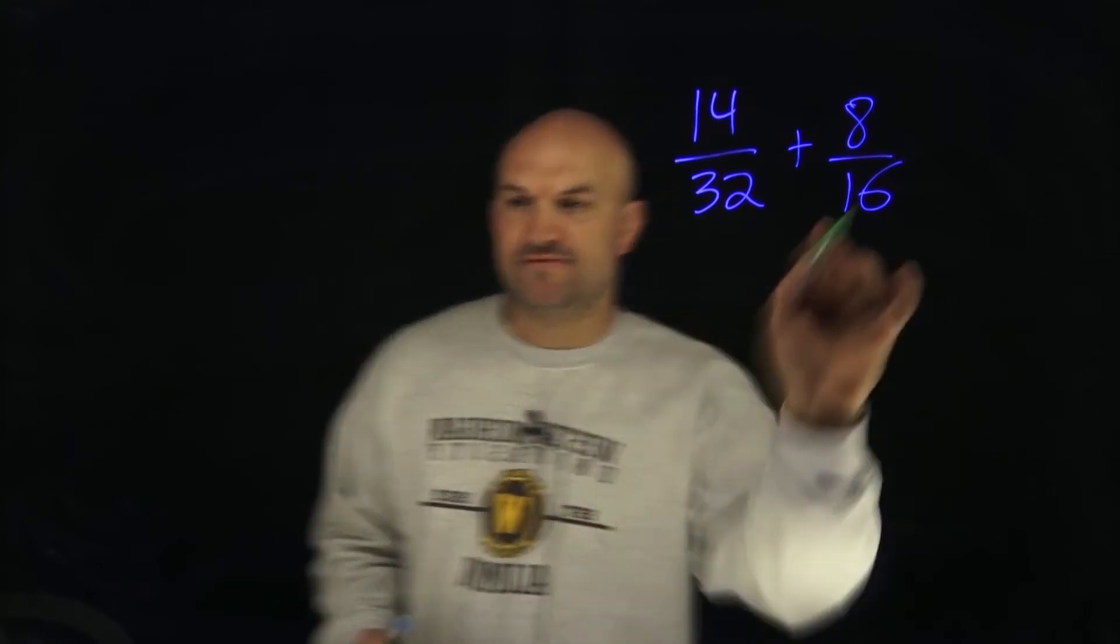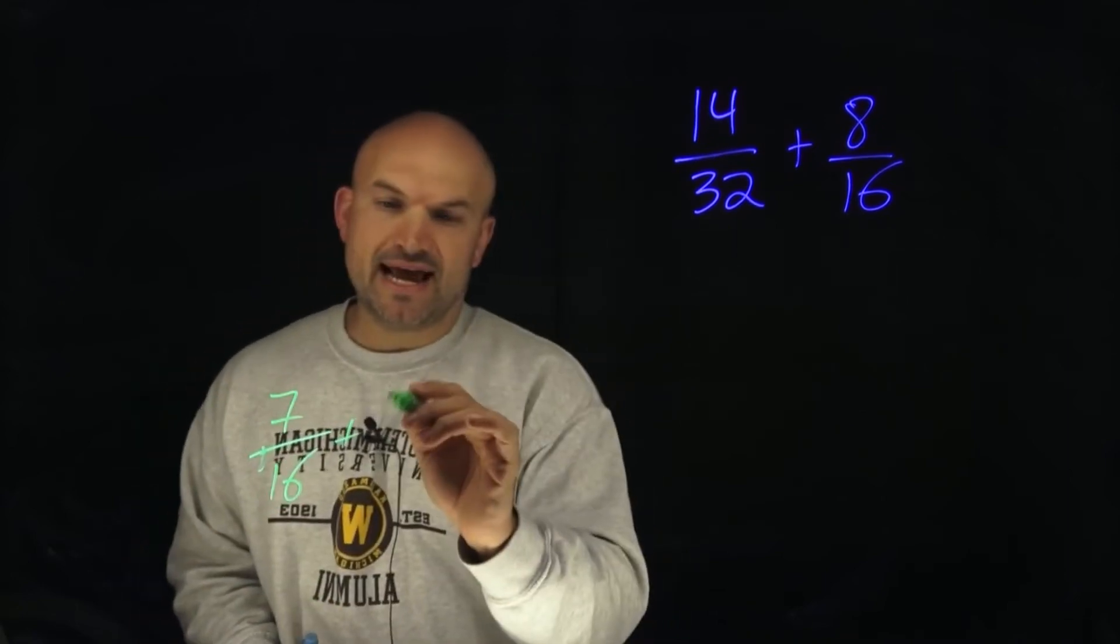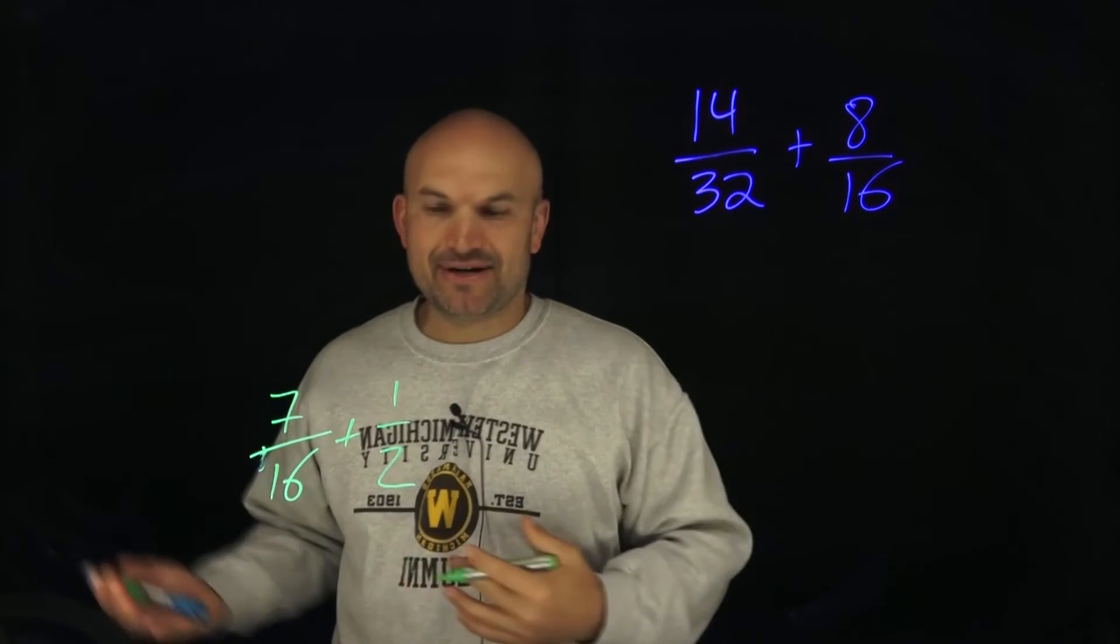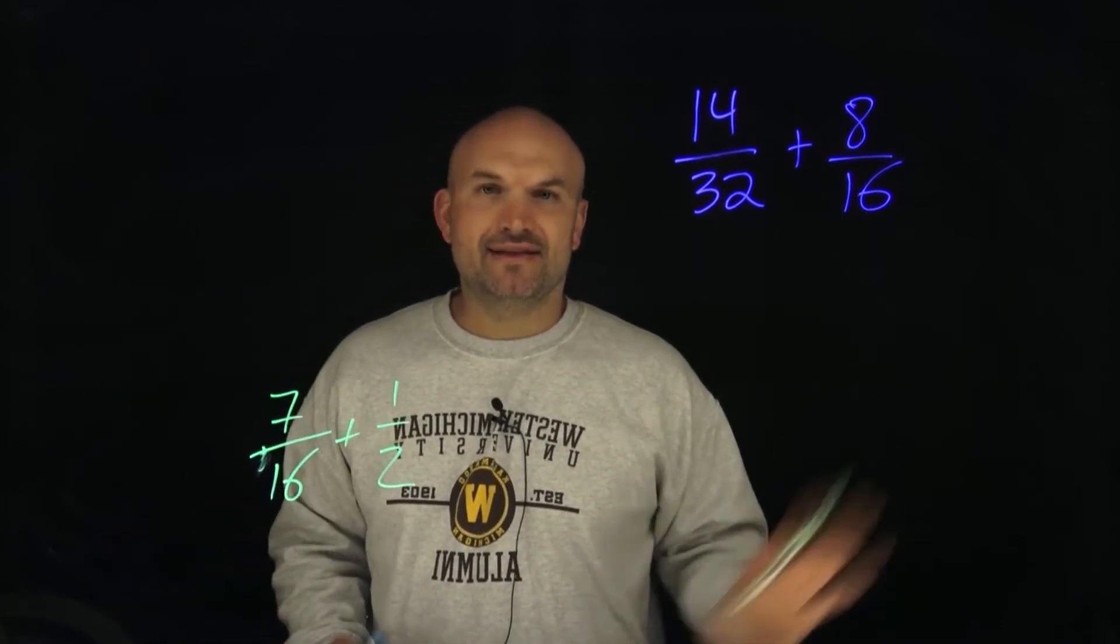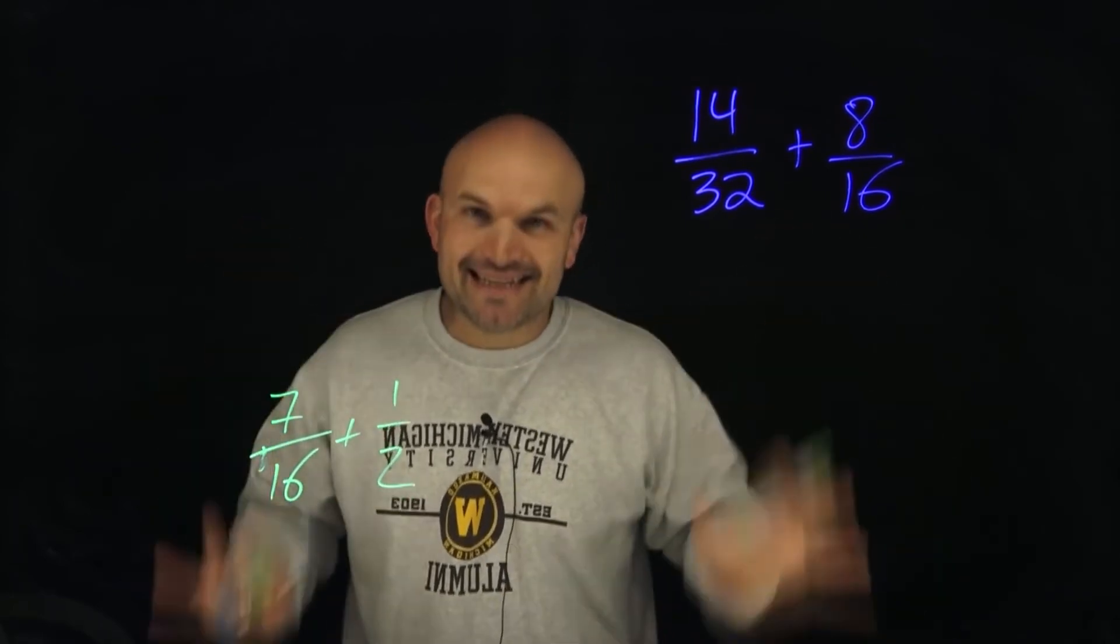We don't want to do that because if you did that, what you now obtain is 7 over 16 and then plus 1 half. Well, then we have to go back and get common denominators again to be able to rewrite this. I want to be able to just simplify this one time to be able to get the common denominator. And I want to find the least common denominator.